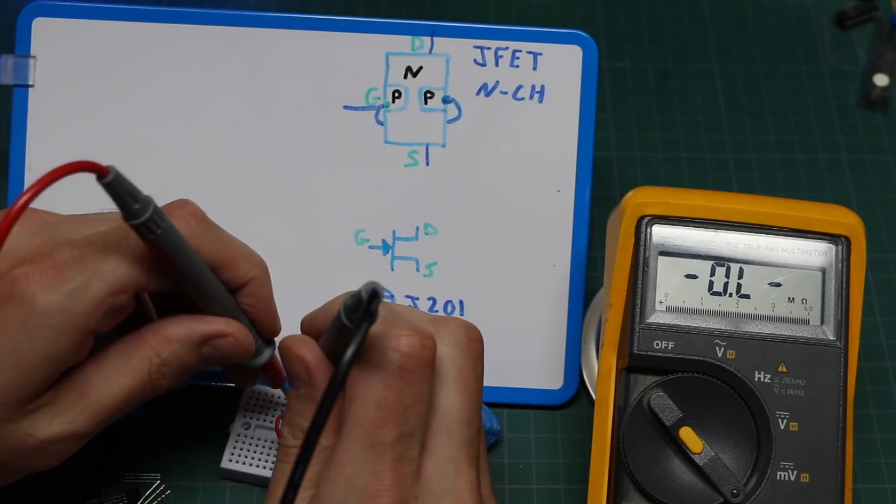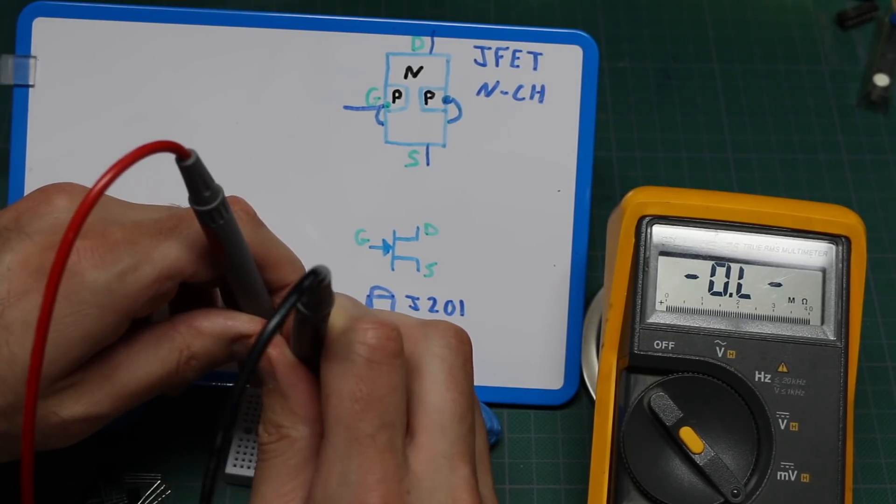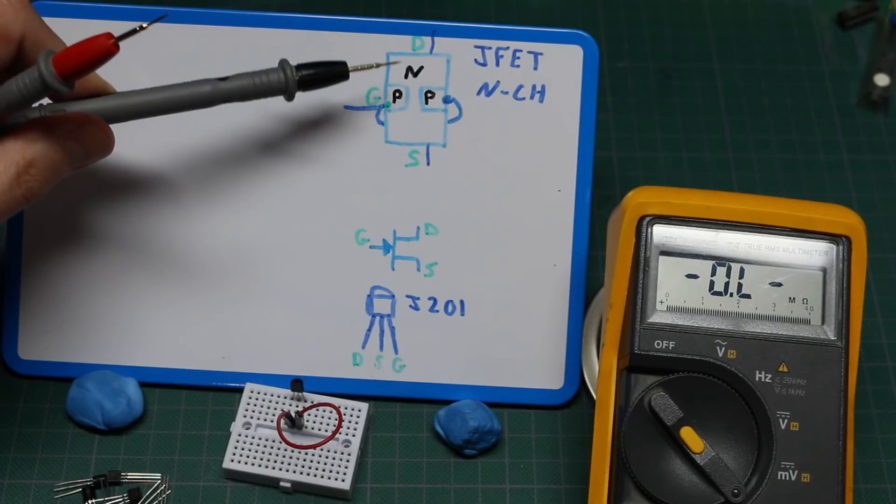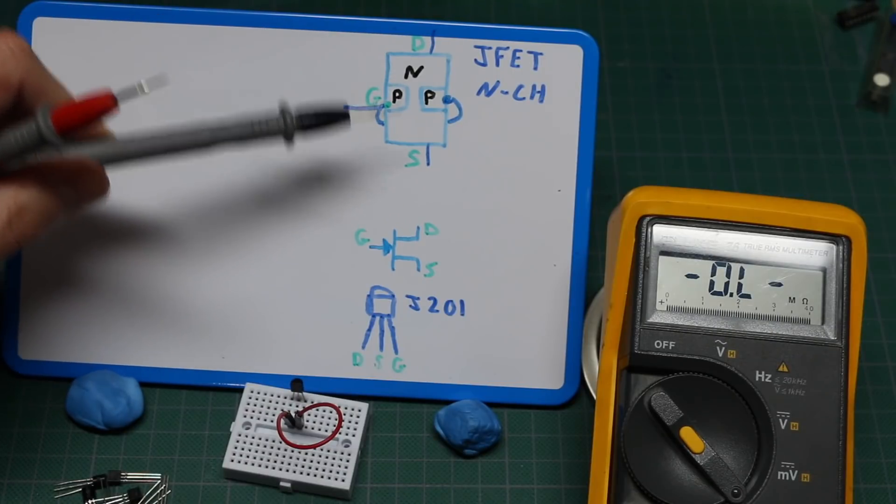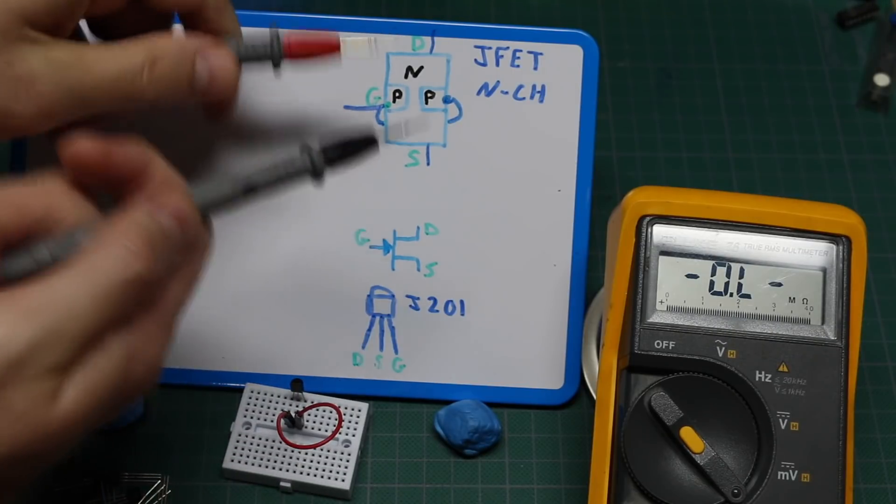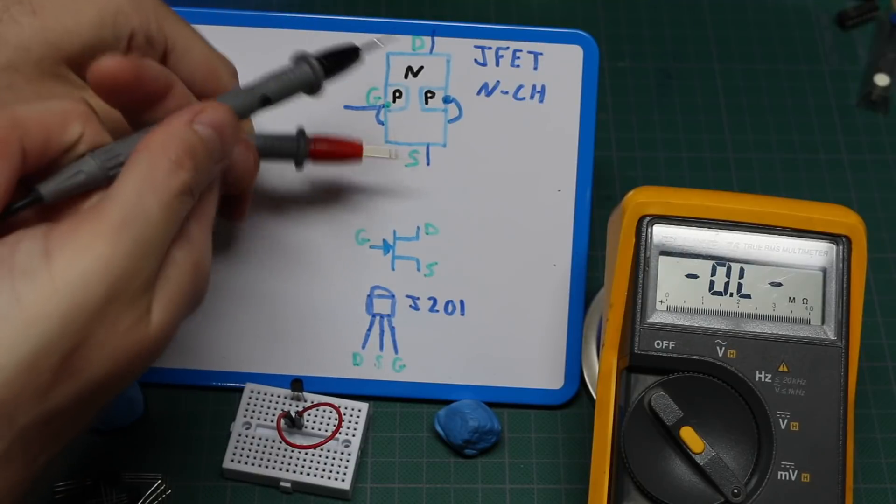Now if I reverse the polarity of those leads, I get no conductivity. If you measure resistance drain to source or source to drain, polarity should not matter.